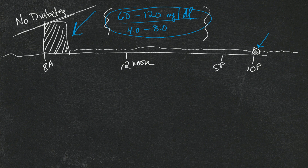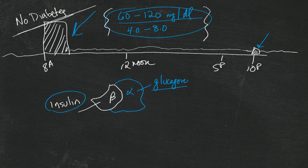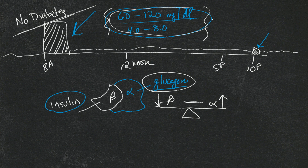The way it does that is like this: here's a little beta cell — it makes insulin — and right next to the beta cell are alpha cells, which make glucagon. These two cells produce the hormones that regulate blood sugars. Insulin makes your blood sugar come down; glucagon makes your blood sugar go up. And between these two hormones, your blood sugar stays within this range most of the time. Magic.